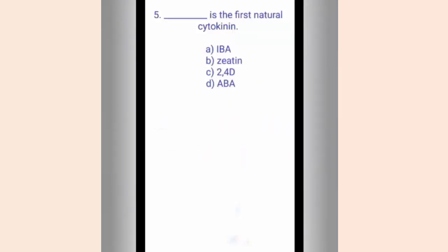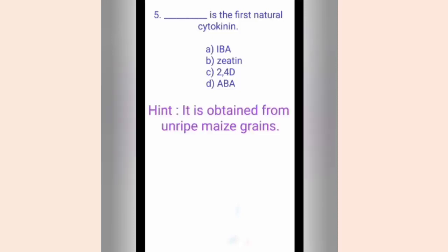Question five. Dash is the first natural cytokinin. The options are A. IBA, B. Zeatin, C. 2,4-D, D. AVA. The hint is it is obtained from unripe maize grain. The correct answer is option B, Zeatin. Zeatin is a cytokinin derived from adenine. It promotes growth of lateral buds and produces bushier plants.